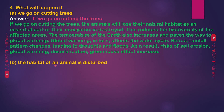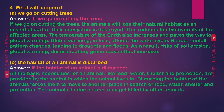What will happen if the habitat of an animal is disturbed? All the basic necessities for an animal — like food, water, shelter and protection — are provided by the habitat in which the animal lives. Disturbing the habitat of animals forces them to move to another place in search of food, water, shelter and protection. The animals in due course may get killed by other animals.